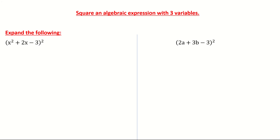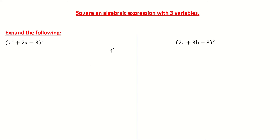Here we're looking at squaring algebraic expressions which contain three variables. Just remember what it means to square something — to square something simply means to multiply it by itself. So if I had 5 squared, it basically means 5 multiplied by 5, which is 25. If you need help on the easier ones which include two variables, check out the other video. But this video is looking at three variables within the brackets.